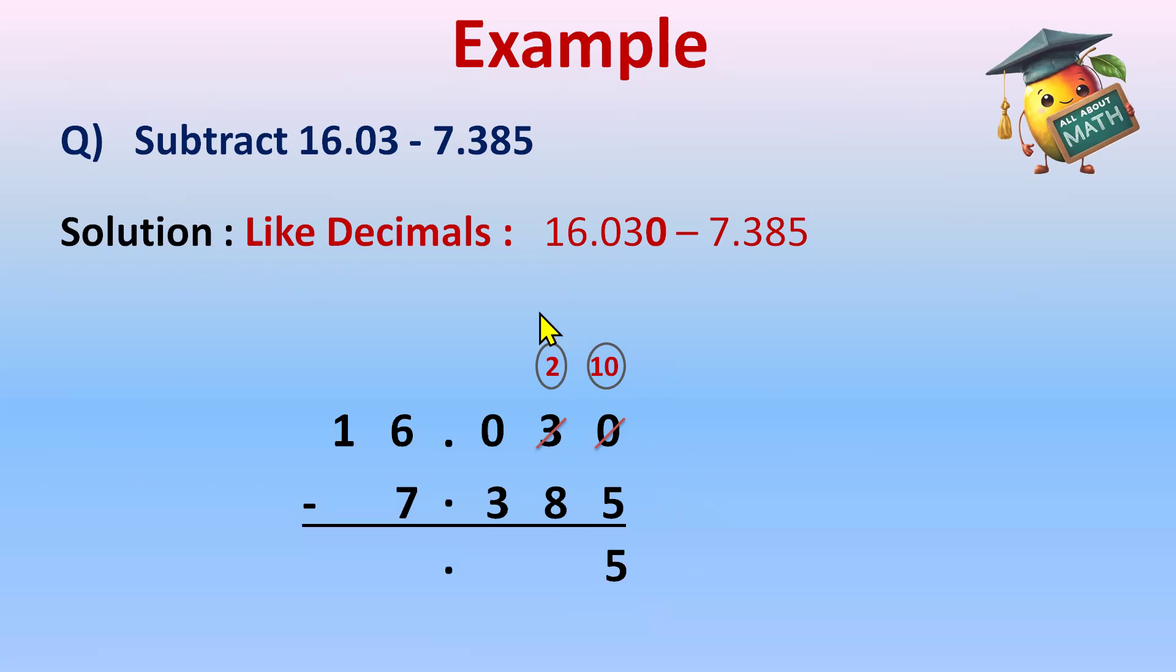Now 2 minus 8, again not possible. 2 will go to 0 to borrow 1, but 0 does not have anything, so will go to 6. We'll borrow 1 and become 10 again.